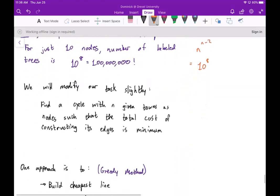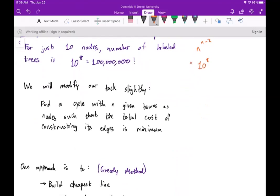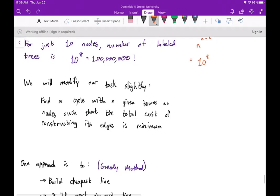So what we want to do is we want to modify our task a little bit. We want to find a cycle within given towns as nodes such that the total cost of constructing its edges is minimal.